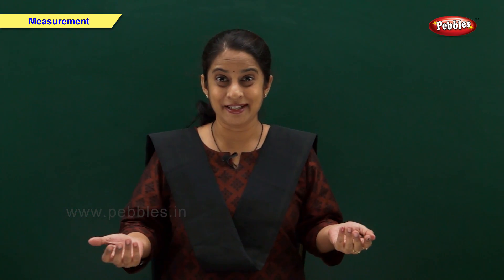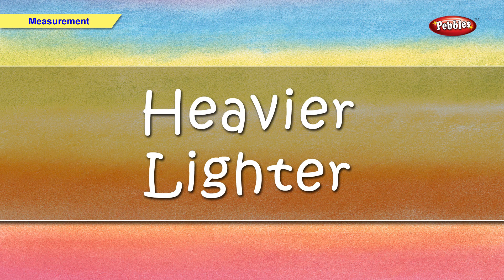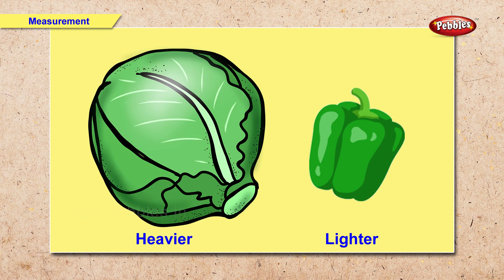Now let us see heavier and lighter. Here we have a cabbage and a capsicum. So which vegetable is heavier and which is lighter? Right. The cabbage is heavier. The capsicum is lighter.